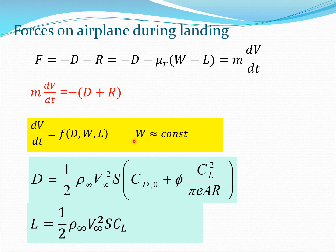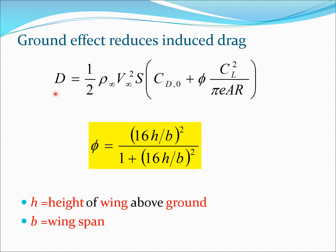For drag, the drag coefficient C_D has two parts: C_D0 (zero-lift drag) and φC_L²/(πeAR) (induced drag). Here AR is the wing aspect ratio, e is the Oswald span efficiency factor, and φ is a ground effect factor less than one that reduces induced drag near the ground. The factor φ is given by: φ = (16h/b)² / (1 + (16h/b)²), where h is the height of the wing above the ground and b is the wingspan.